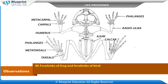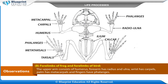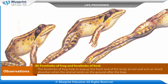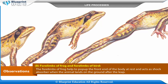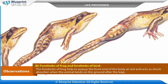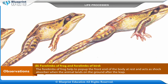Observation B: Four limbs of frog and four limbs of bird. The four limbs of frog consist of upper arm, forearm, wrist, palm, and five fingers. The upper arm consists of the humerus; the forearm has the radius and ulna; the wrist has carpals; the palm has metacarpals; and the fingers have phalanges. The forelimbs of the frog help to prop up the front end of the body at rest and act as shock absorbers when the animal lands after a leap.